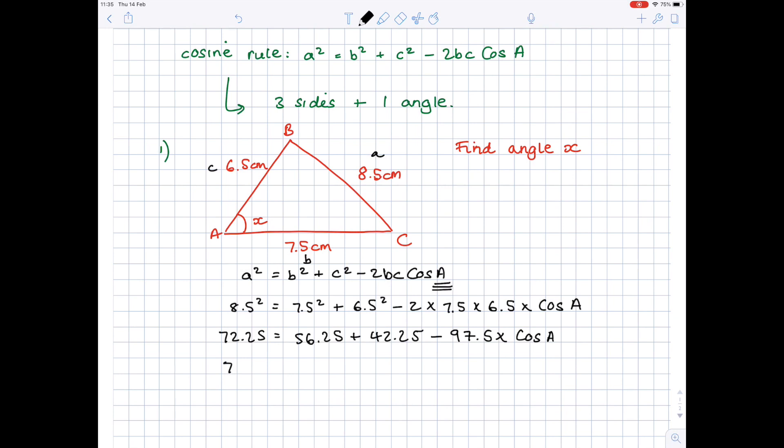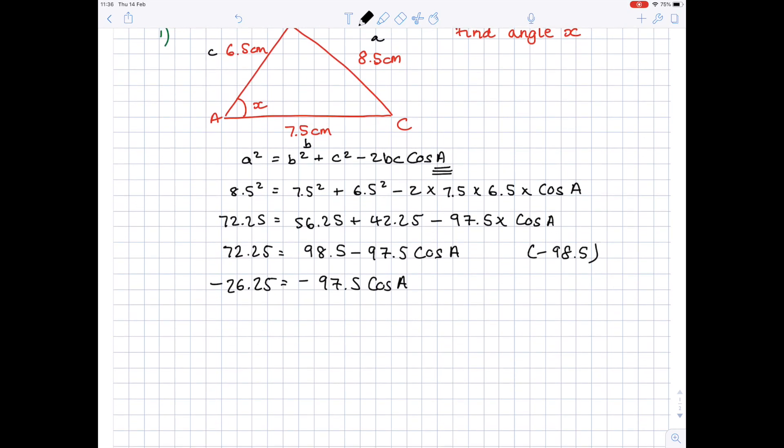More simplifying needed. Let's keep the left-hand side the same and sort out 56.25 plus 42.25, and you get a value which is 98.5 minus 97.5 cos A. You can't subtract that 97.5 because it's multiplied by cos A. Now, I need to get all my numbers on the same side, so I'm going to take 98.5 away from both sides. You get an answer which is minus 26.25 equals minus 97.5 cos A. Because both sides are minus, you can effectively ignore them and make them both positive.